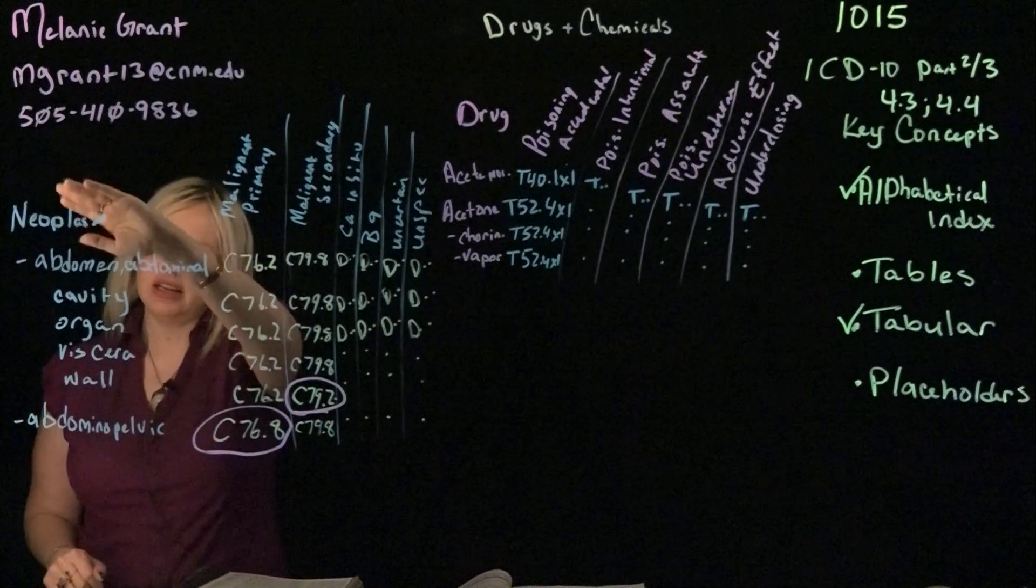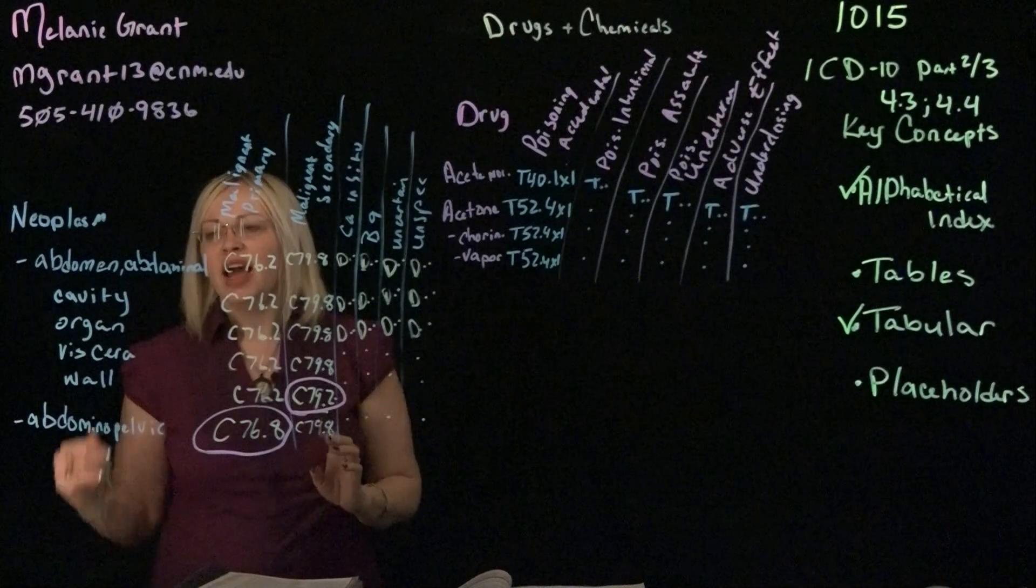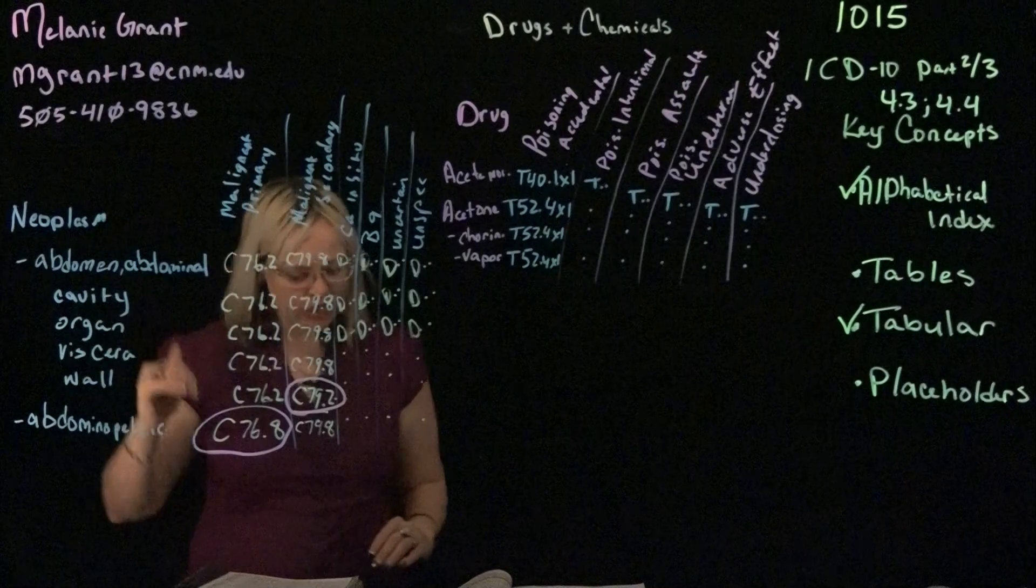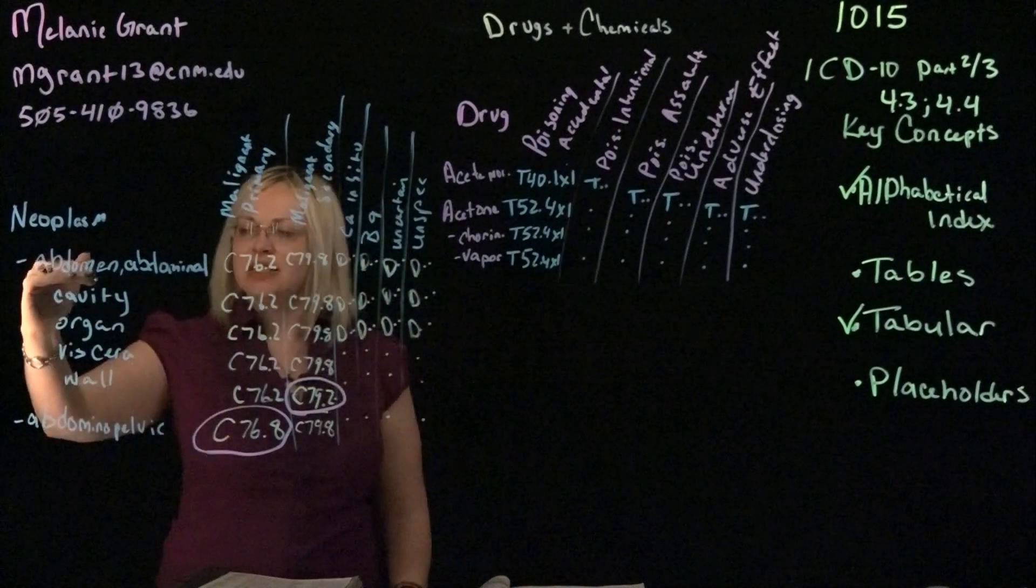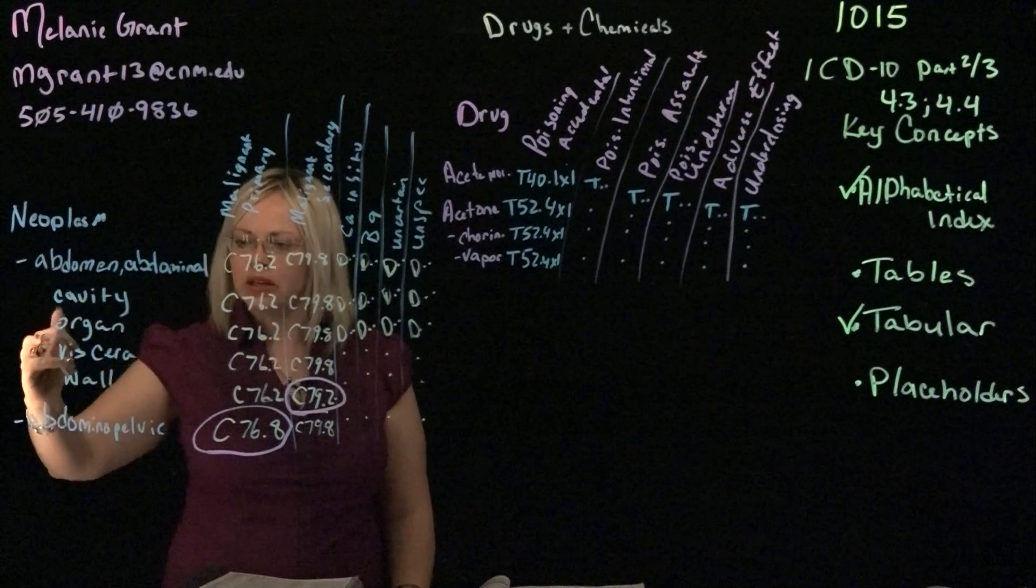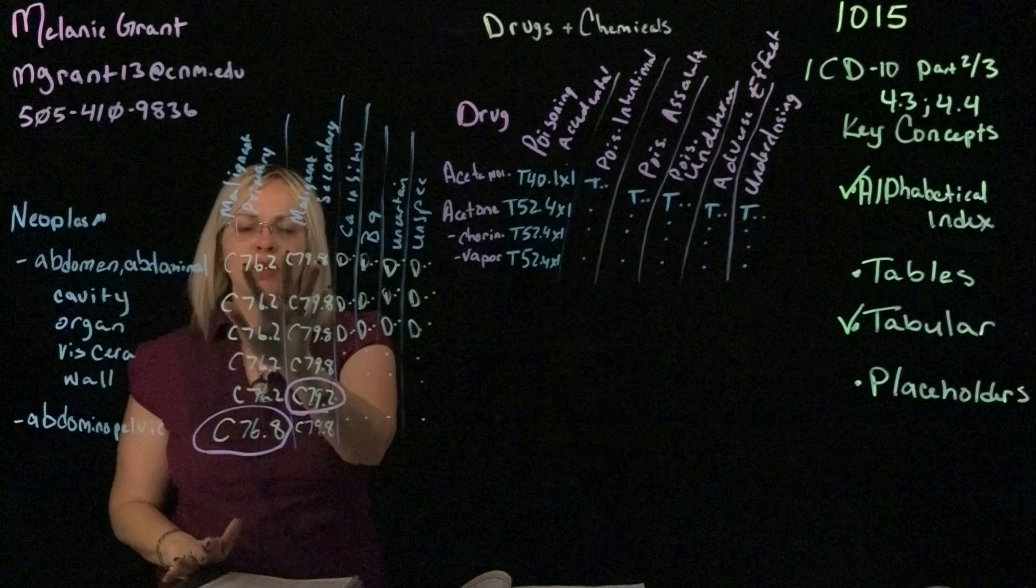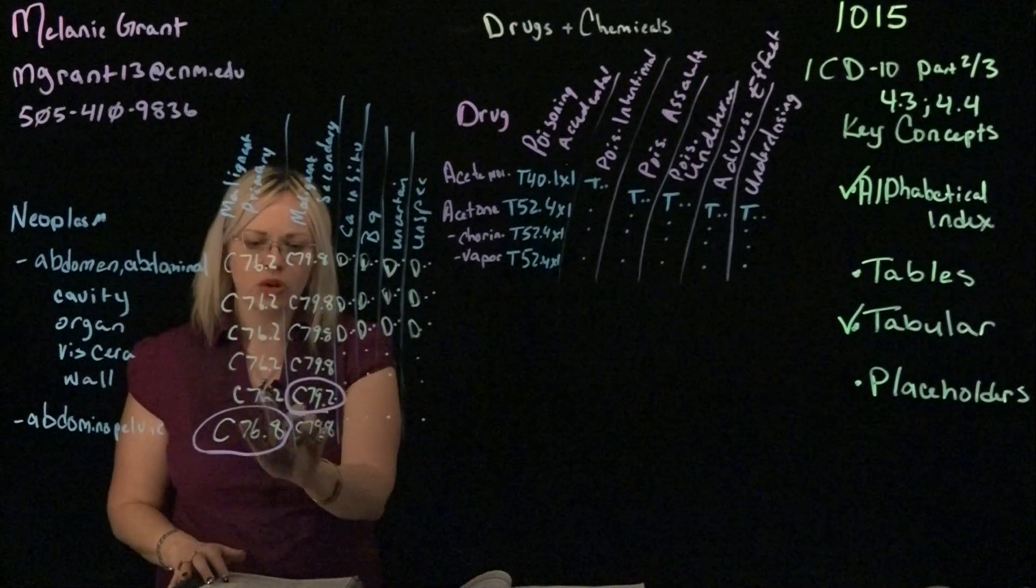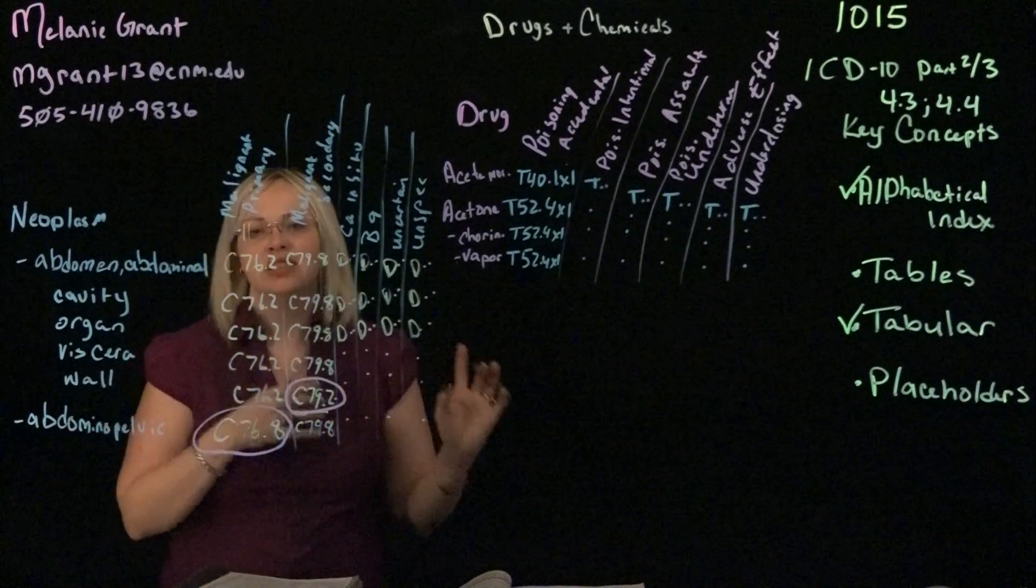These boxes read in anatomical order. So you're going to say, where is my neoplasm located? And then, based off of that location, any specific details. So the example we have here, which represents page 76 of your textbook, has the abdomen, abdominal, with the breakdown of options for cavity, organ, viscera, and wall. You'll notice that by looking at these codes, some of them remain the same. However, others will change. And so when those codes change, that's because that specific area has a unique section.